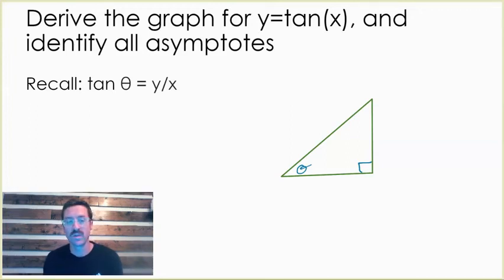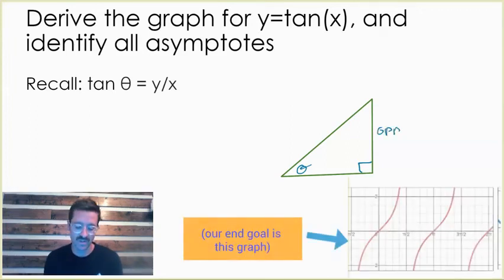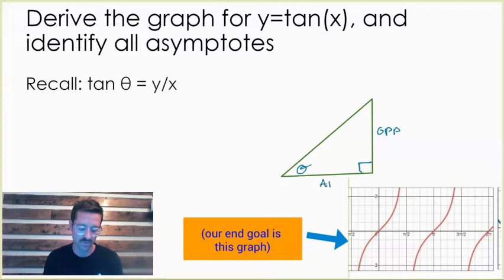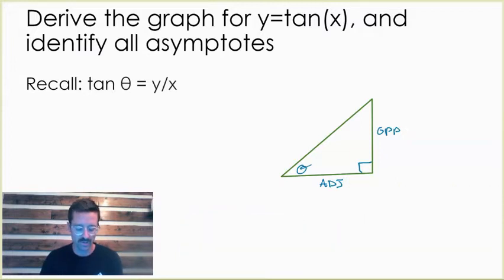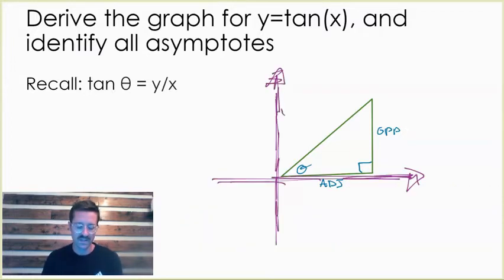Back when we were doing right triangle trigonometry, we defined tangent as the ratio of opposite to adjacent for a right triangle. What we're doing now is looking at this trig taking place on the coordinate plane. If I superimpose this triangle on a coordinate plane, this point is the ordered pair x comma y. The opposite side is the y coordinate, and the adjacent side is the x coordinate. So instead of opposite over adjacent, we're looking at y divided by x, and we'll see how that ratio changes as our angle of rotation changes.